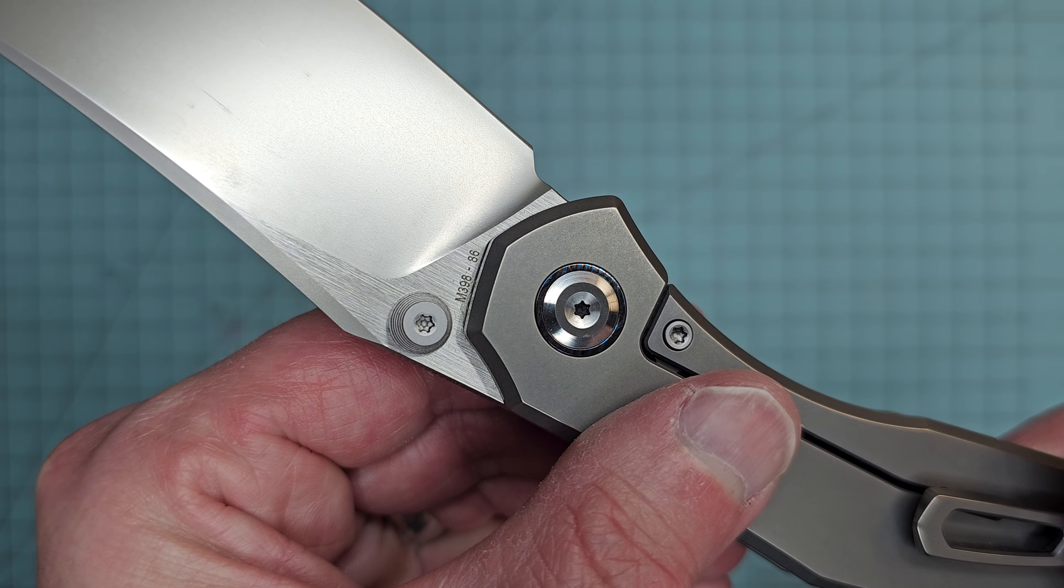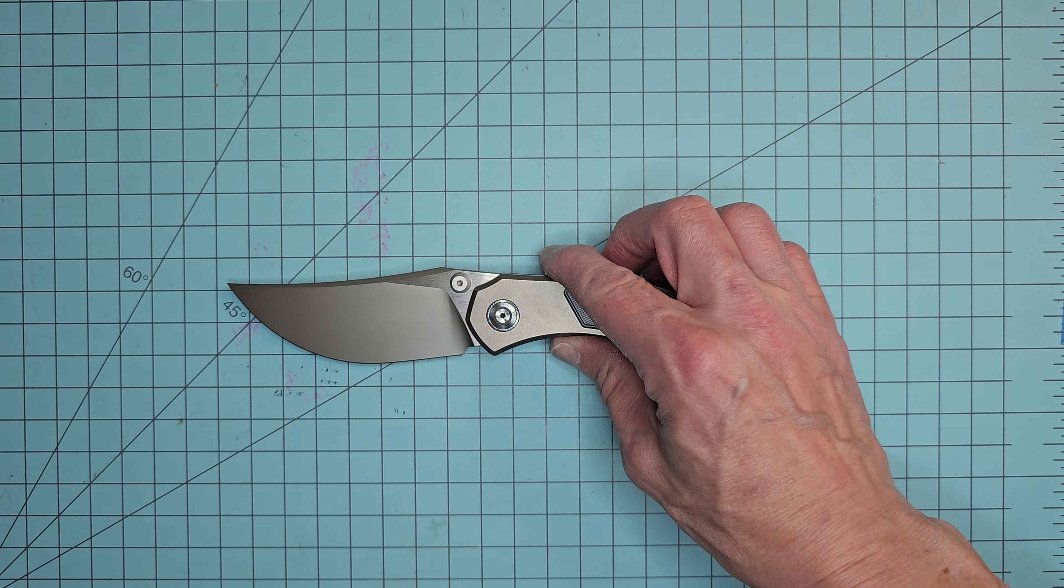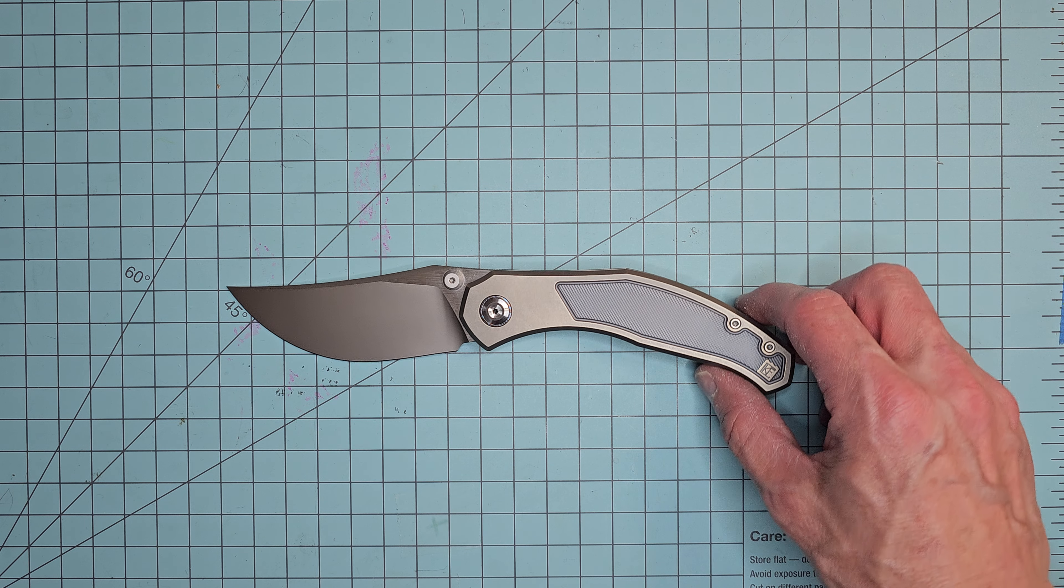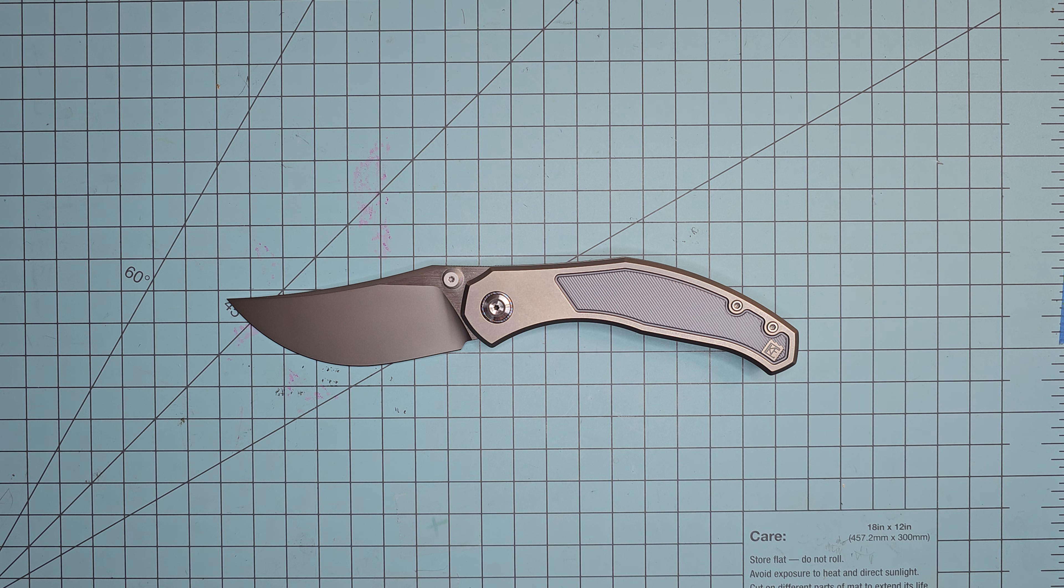And as you can see it is M398 steel which on paper is a higher performing version of M390. More carbon, more vanadium, things of that nature.